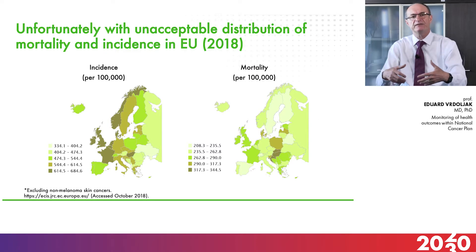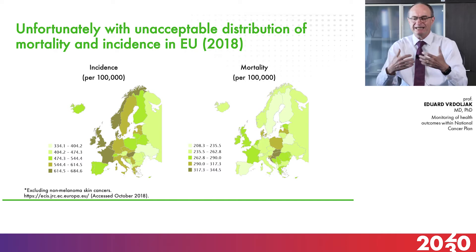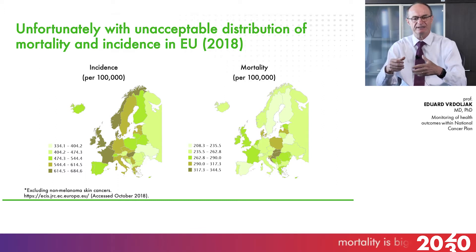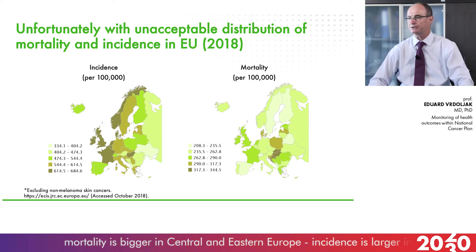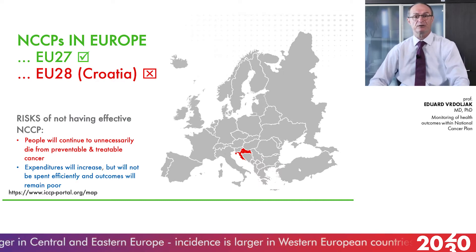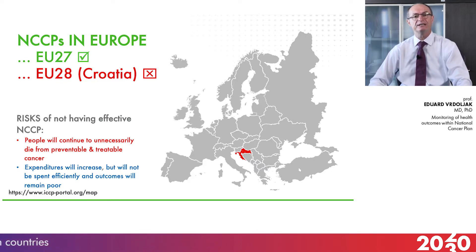From that perspective, we can define Europe as underserved from a cancer perspective. But within Europe, we have even more underserved areas such as Central and Eastern Europe. While mortality is higher in Central and Eastern Europe, incidence is larger in Western European countries — meaning patients diagnosed with cancer are dying more often in our region. Within that region is Croatia, the last country without a plan in the European Union, but this is going to change in days or weeks because our plan is ready and about to be signed soon.